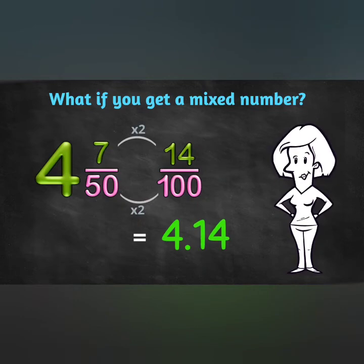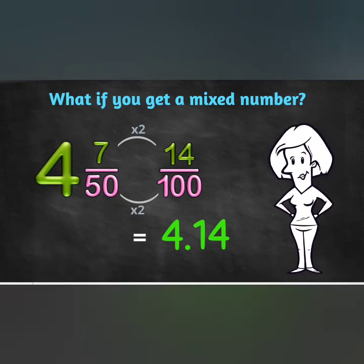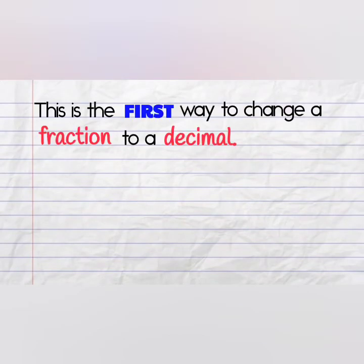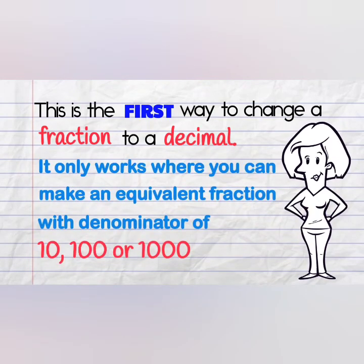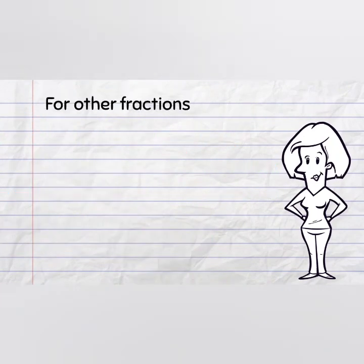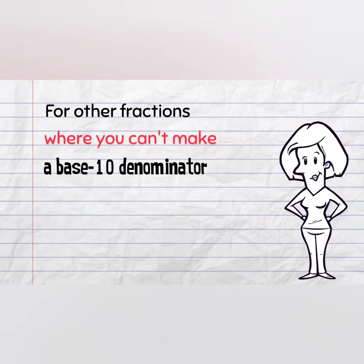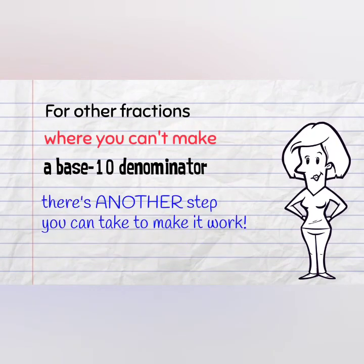You've got the idea! And now it's time to try some for yourself! This is the first way to change a fraction into a decimal. It doesn't work for every fraction, only those where you can make an equivalent fraction with a friendly base-10 denominator. For other fractions where you can't make a friendly denominator, there's another step you can take to make it work. And that's part 2 of fractions to decimals. See you next time!